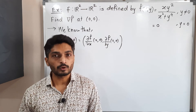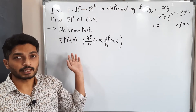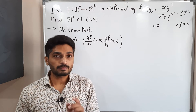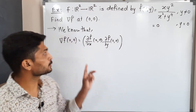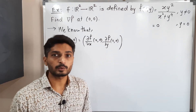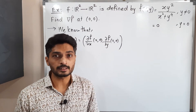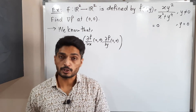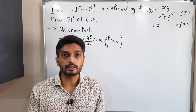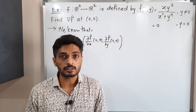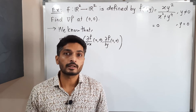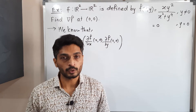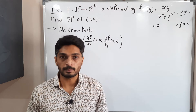Let us find it. The definition of ∇f at (0,0) requires taking partial derivatives with respect to x and with respect to y at (0,0). One important thing: if the function is defined with two or three different definitions with some conditions, then it is better to use the definition of the partial derivative to find its partial derivatives.